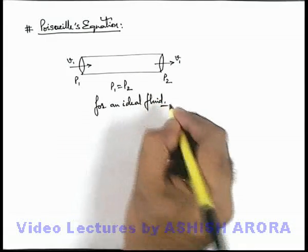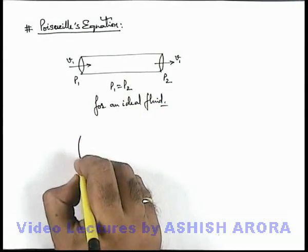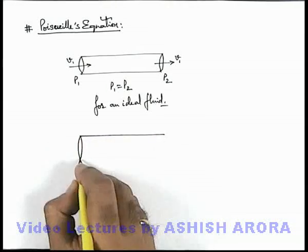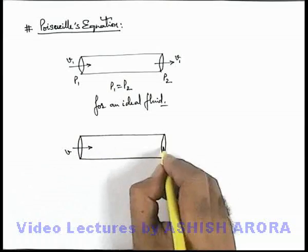But this is not the similar situation when a viscous fluid flows. If we talk about a viscous fluid which is flowing through a pipeline, and in the tube if the flow velocity is v.